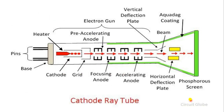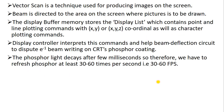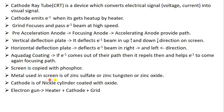The screen is coated with phosphorous. The screen is of phosphor. The metal used in the screen is zinc sulfate, zinc tungsten, or zinc oxide. So inside the phosphorous screen, some layers will be there, and those metal layers can be zinc sulfate, zinc tungsten, or zinc oxide.